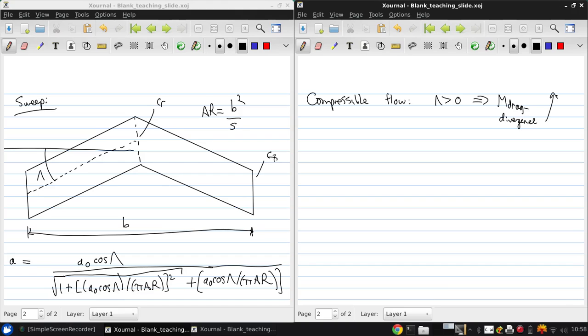So if we note that thin airfoils as we talked about last time will in general have a higher critical Mach number and therefore a higher drag divergence Mach number. So if a swept wing has an airfoil section with some thickness T over C, then sweeping that wing with sweep angle lambda sees an effectively thinner airfoil.